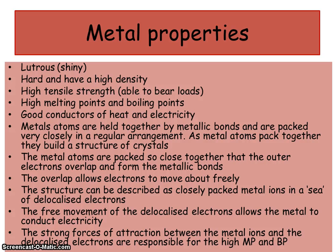Looking at the actual structure, metal atoms are held together by metallic bonds and are packed very closely in a regular arrangement — like drawing a solid in year 7 with particles in straight lines, one above the other. The overlap allows electrons to move about freely, and the structure can be described as closely packed metal ions in a sea of delocalized electrons. That's why metals are good conductors of electricity — because of the movement of the delocalized electrons.